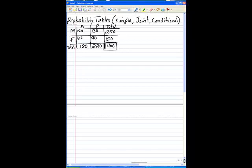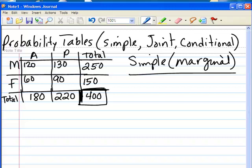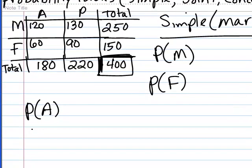Let's talk about simple, which is sometimes called marginal probabilities. Simple or marginal probabilities are the probabilities of the individual events — the probability of being a man or a woman, and the probability of buying a car because of its appearance or because of its performance.